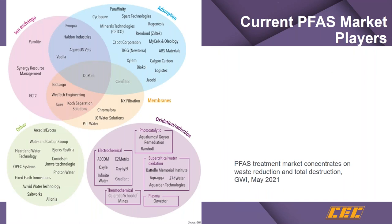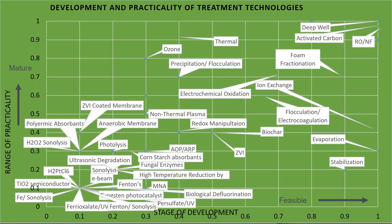There is a tremendous number of technologies and many players. We've tried to make sense of them by categorizing absorption technologies, ion exchange, oxidation reduction, and others including plasma. We put together a chart looking at stages of development with a range of practicality. In the upper right are reverse osmosis, activated carbon, and ion exchange — very well accepted technologies — while laboratory or innovative technologies cluster toward the lower left.